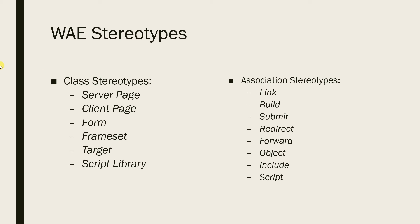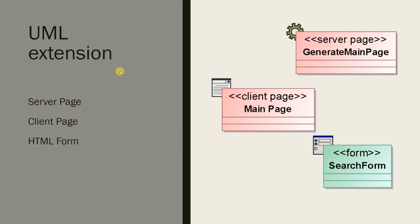The web application extensions include class stereotypes and association stereotypes. The class stereotypes are: server page, client page, form, frameset, target, script library. The association stereotypes are: link, submit, redirect, forward, object include, and in-script. For the UML extension we need to consider three main parts.